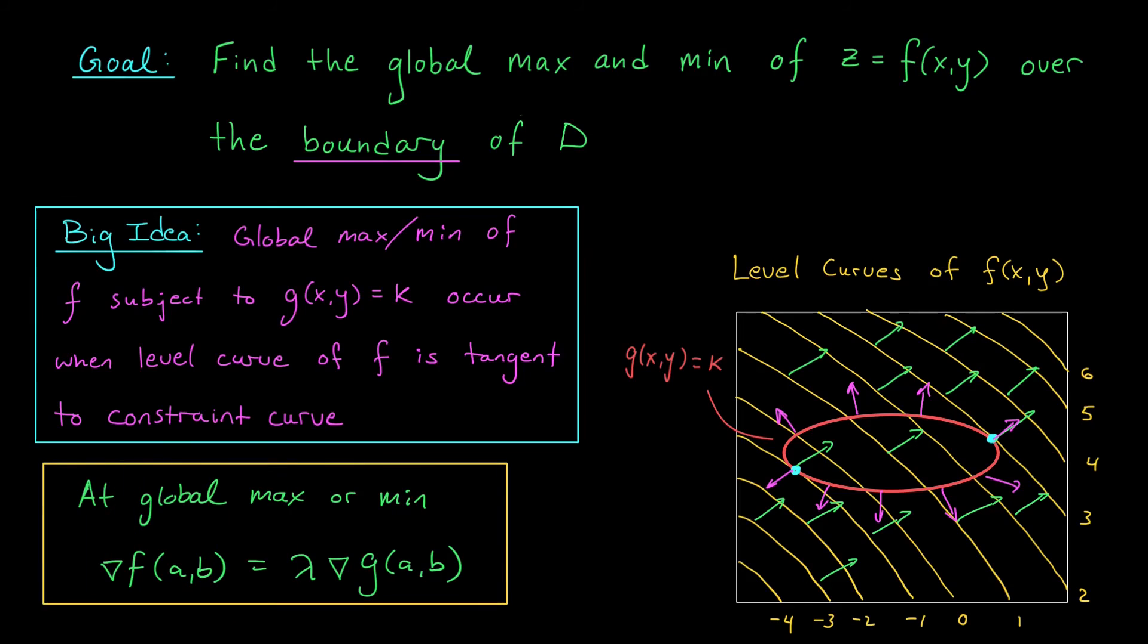Now, there are a couple exceptional cases to keep in mind here. Firstly, it could be that the gradient of g is equal to zero at certain points along this constraint curve. If that's the case, we could run into some weird situations where the global max occurs at a point where the gradient of g is zero, and hence the whole right-hand side here is zero, but the gradient of f is not zero.